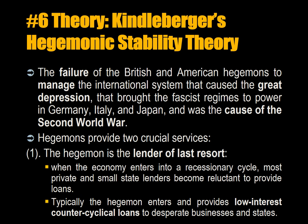Kindleberger argues that it was the failure of the British and American hegemons to manage the international system that caused the Great Depression. This ultimately brought unemployment that put fascist regimes in power in Germany, Italy, and Japan, and was the main cause of the Second World War.